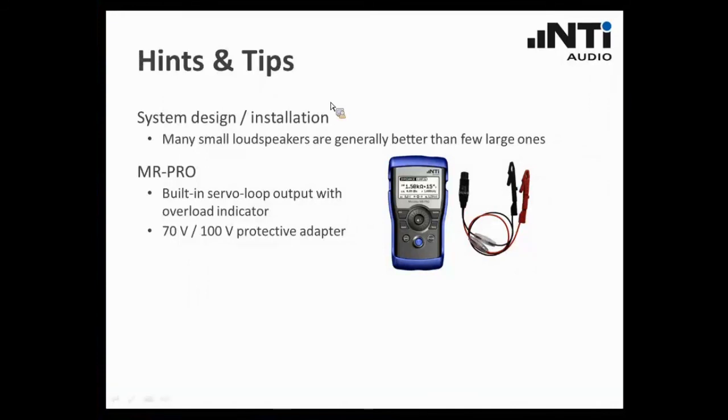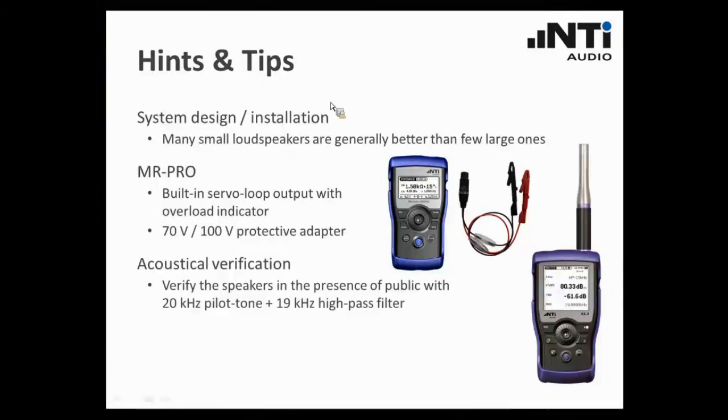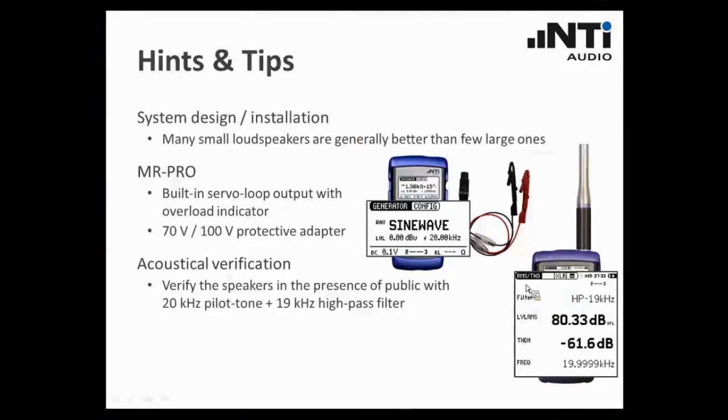Another hint refers to the acoustical verification of your test system. For instance, if you want to verify the sound pressure level of the installed loudspeakers, but you know that there are some people walking around, you have to execute this measurement in the presence of the public. There is a trick to do that, and that is by using a 20 kHz tone, we call it a pilot tone, and to apply a 19 kHz high-pass filter in the XL2. This way you can measure the performance of the loudspeaker without the people walking by hearing that - most of them will not hear it. You also filter out the noise that these people are generating, the chatting, the talks and the walking. This is just to show you how the setup looks like. You are using the MR-PRO as a sine wave generator, and the XL2 you select the RMS measurement function and activate the 19 kHz high-pass filter.